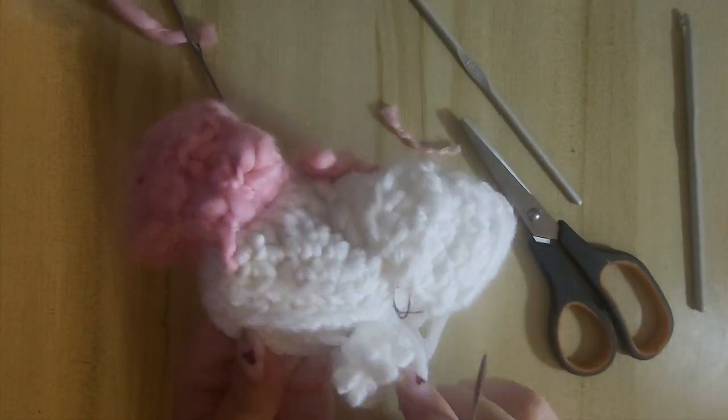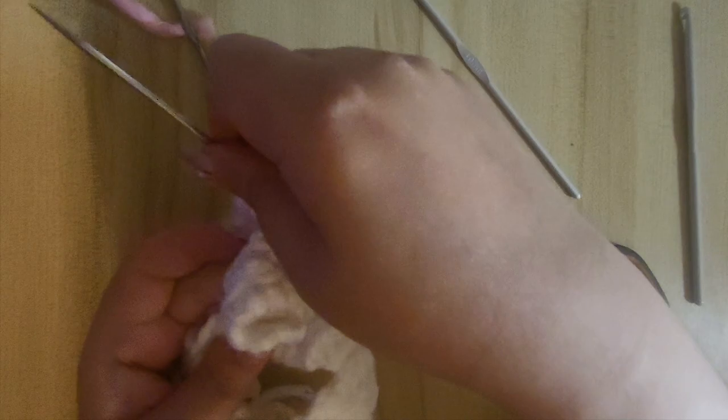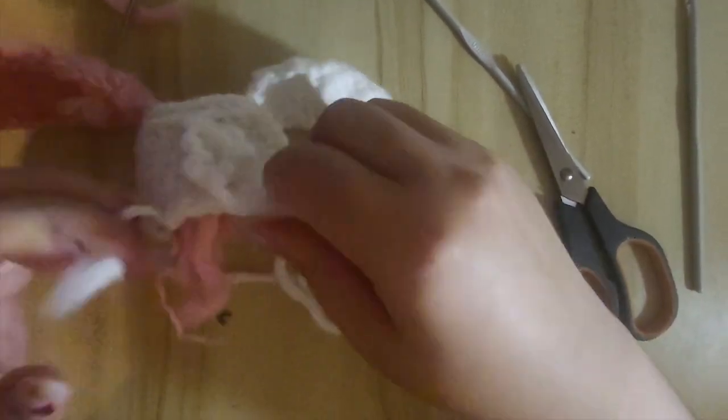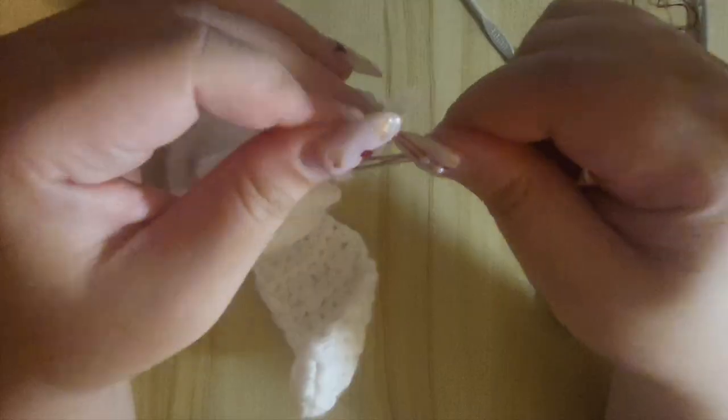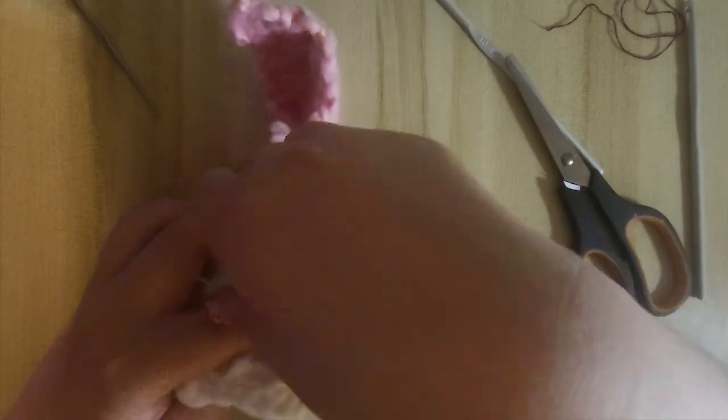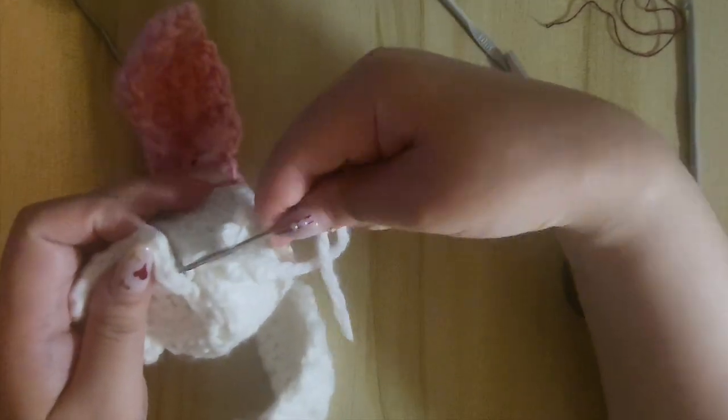Let's attach the tail now. Once finished, let's add some stuffings to the doll before we close it. I'm using the white yarn from the tail to close off the remaining bottom part.